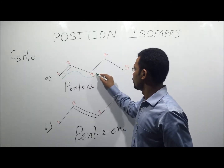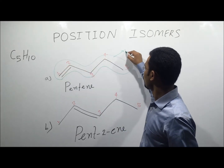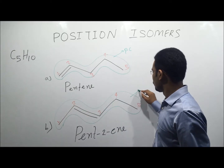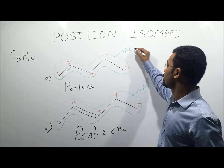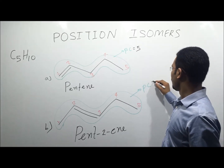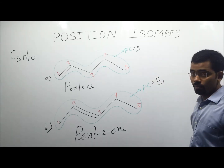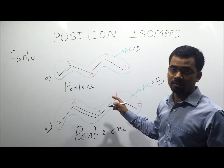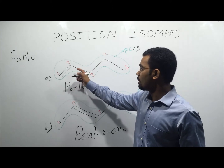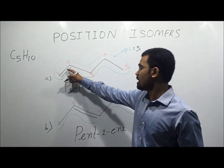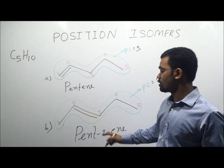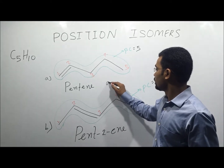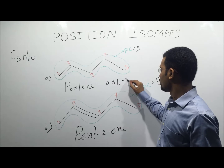First of all, find the parent chain (PC). Here this is the PC. The number of carbon atoms in PC is 5. Here also the number of carbon atoms in PC is 5. It means both molecules have the same number of carbon atoms in their PC. So only the position of the multiple bond is changed — here the position of the multiple bond is 1, while in molecule B the position of the multiple bond is 2. Therefore, both are considered as position isomers. A and B are PI (position isomers).